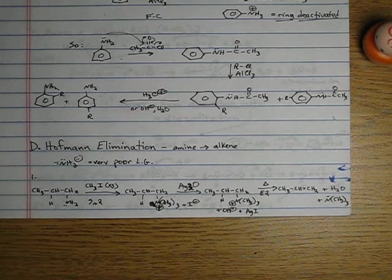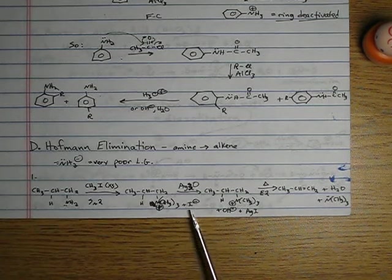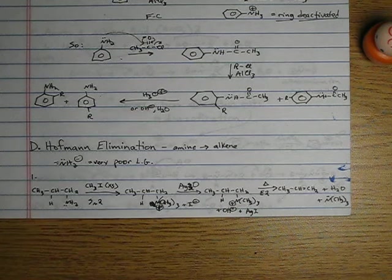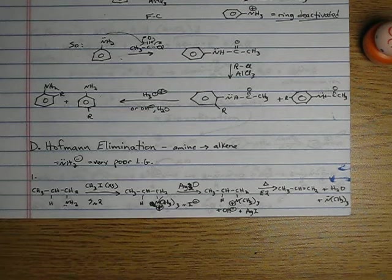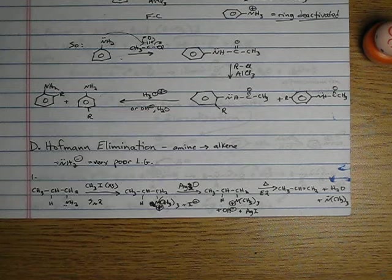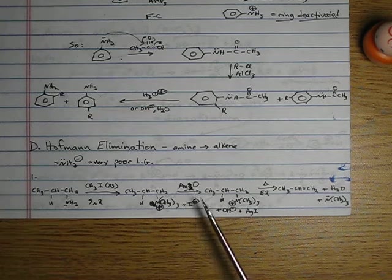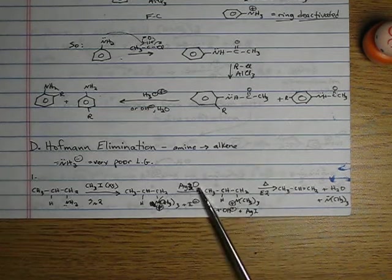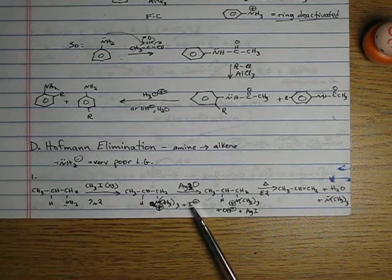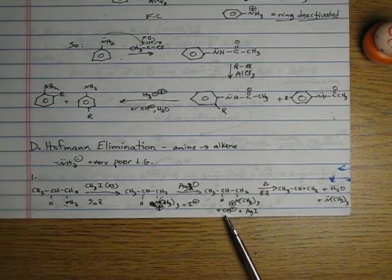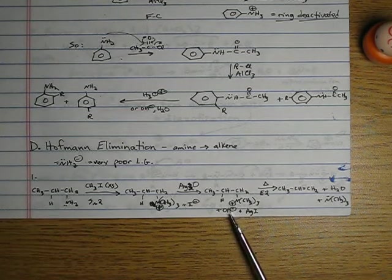And then Hofmann remembered his Gen-Chem-1. Do you remember your Gen-Chem-1? Do you remember solubility rules? All iodides, chlorides, and bromides are soluble except those with silver, mercury one, and lead two plus. So Hofmann said, I've got iodide here. I need to get that out of here. I can precipitate it out with silver. And he found out if he put in silver oxide instead of a different silver salt, that not only does he precipitate out AgI as a solid, but then the counter ion becomes hydroxide.